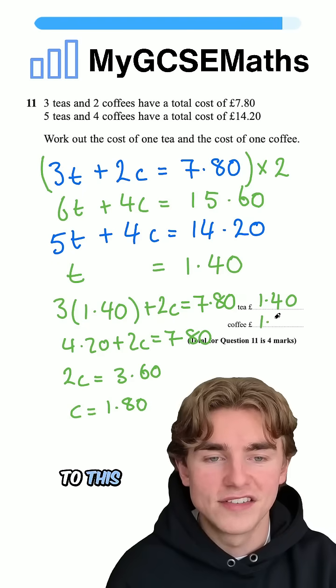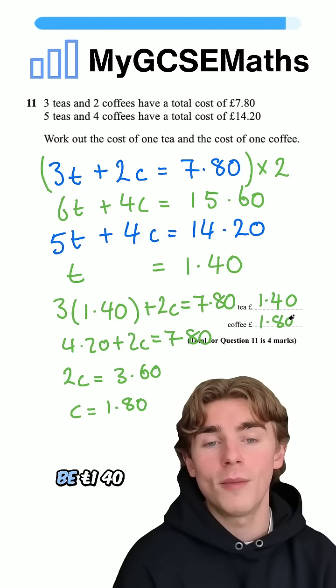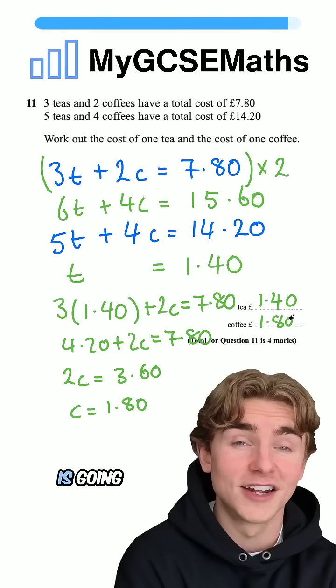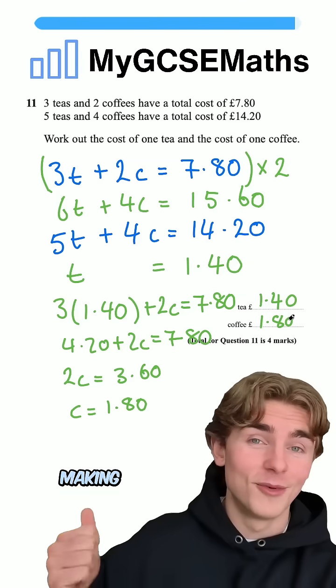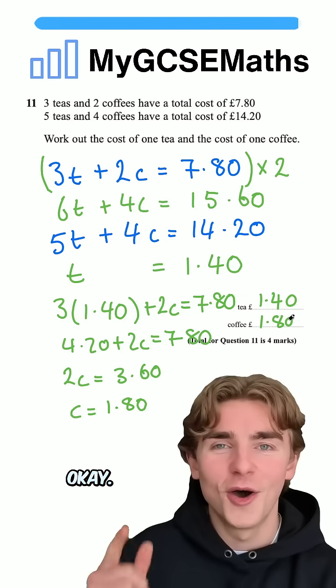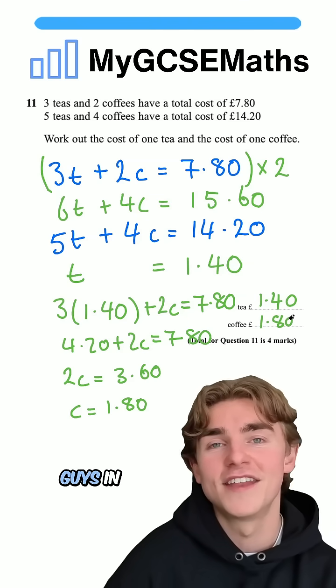And this is going to give us our answer to this question. A cup of tea is going to be one pound 40, and a cup of coffee is going to be one pound 80. To be honest, that coffee sounds like a bargain. It's making me want to go and get one now. Okay, hopefully that one made sense. See you guys in the next video.